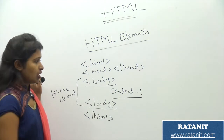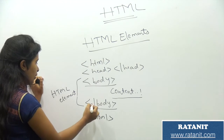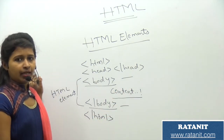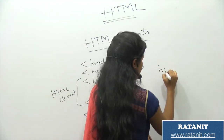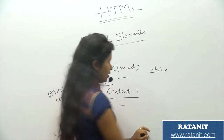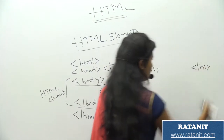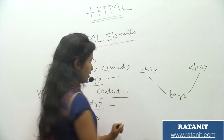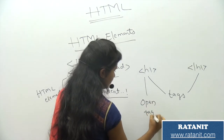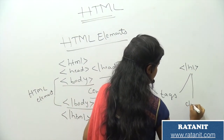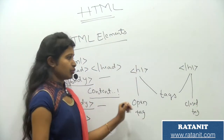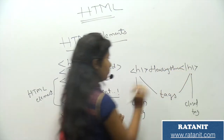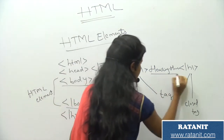This is my complete HTML body element. It contains an open body tag, a closed body tag, and the content in between. For example, I have my h1 tag — h1 is my open tag and I'm closing it with a close tag. The content in between, 'heading here,' is my content.